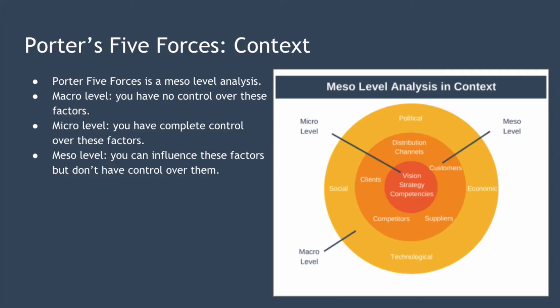The micro level is the opposite — it's internal to the organisation and entirely under the organisation's control. So if a firm wants to change the colour of its website it can go straight ahead and make that happen. The meso level sits between these two levels, and whilst firms can influence meso level factors they don't have complete control over them. The real power of Porter's Five Forces is that it gives you a starting point to think about how you can shape meso level forces to be in your favour so that your organisation increases its profit margin and becomes more profitable.